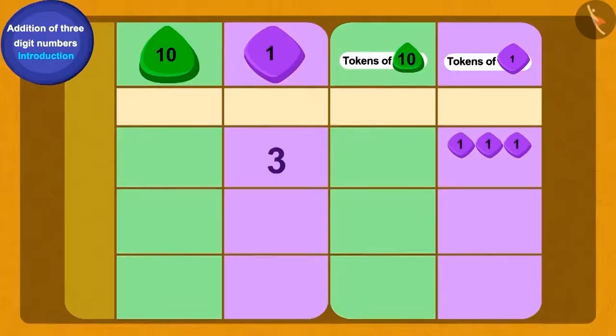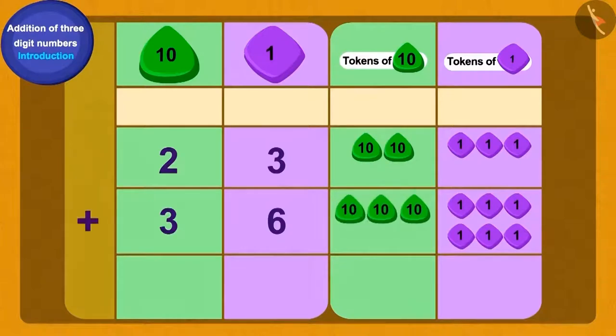To find the total number of gold eggs, we will add thirty-six to twenty-three. Do you remember you learned in class two about how to write two-digit numbers using the method of tokens of tens and ones? We can write twenty-three and thirty-six using tokens like this. We will first add the ones tokens. Add six ones to three ones and we get how many ones? Nine ones.